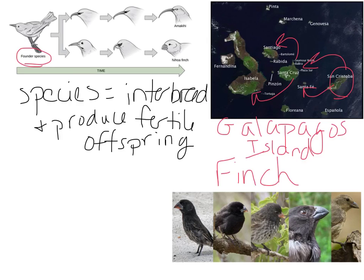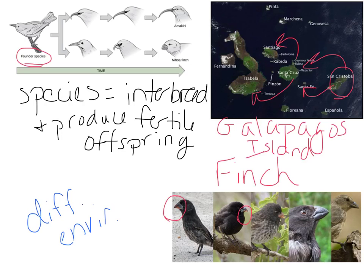As the finch settled on these various islands, all those islands were different — on each island there was a different environment with different food sources available. So the finch has to be able to get all the different kinds of food. In a certain area, depending upon the food source, the beak on a finch makes a difference. If you look at these finches, you can see they all have slightly different beaks. A shorter, wider beak is better for cracking open nuts and seeds, while a longer, thinner, narrow beak would be better for getting flower nectar. Depending upon the food source, it was better to have a certain type of beak.